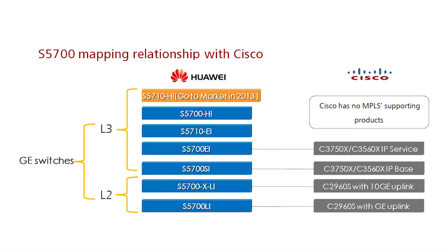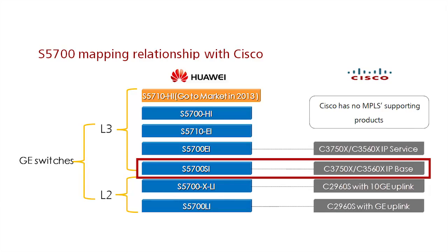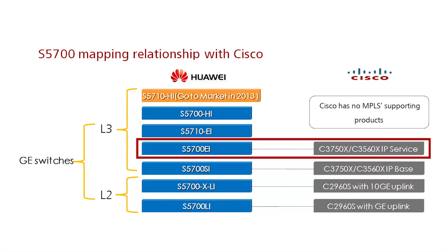In the layer 3 gigabit Ethernet space, Huawei offers four sub-series that bring many more capabilities to the table than Cisco. Cisco offers the 3560X, which does not support stacking technology, and the 3750X, which does. Huawei's S5700 SI is quite similar to the Cisco 3000 with IP Base software, whereas the S5700 EI is quite similar to the Cisco 3000 with the IP Services version.